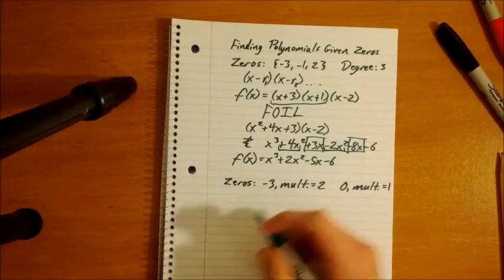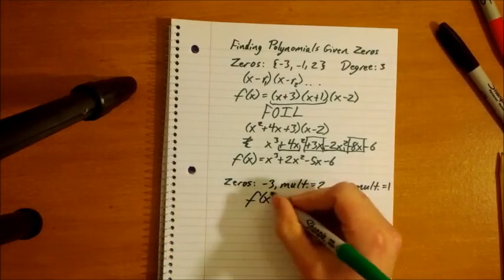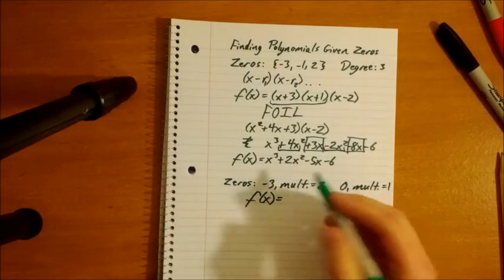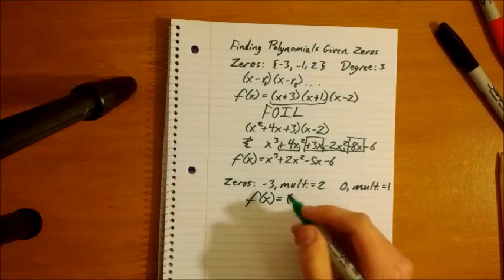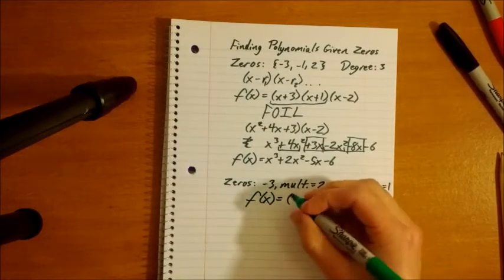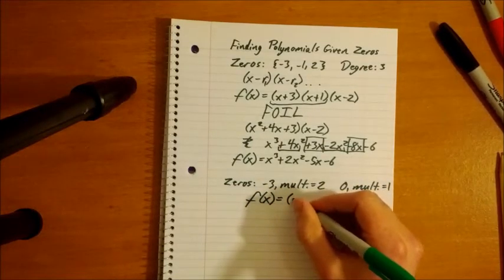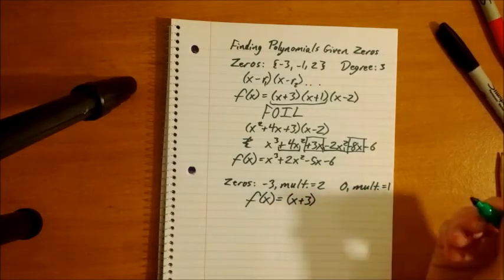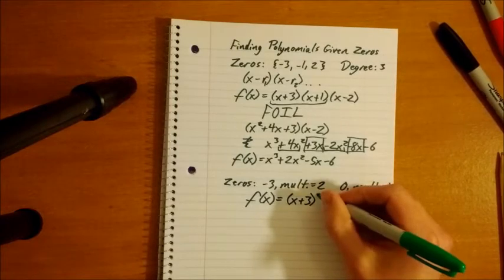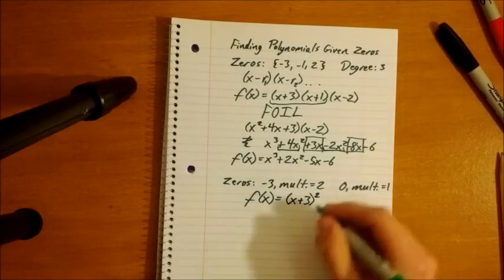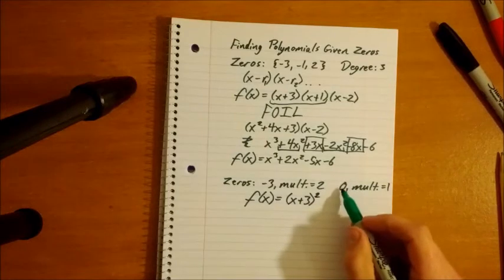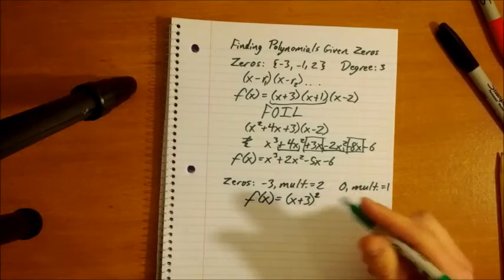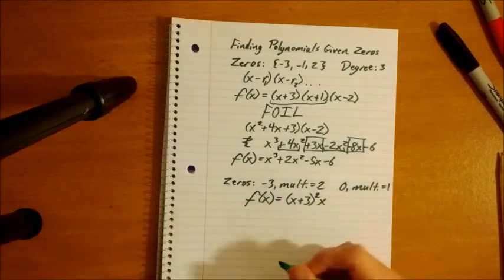Okay, so we have function of x equals, okay, have our factors, x minus 3, minus negative 3. X minus negative 3 is x plus 3. Okay, multiplicity of 2. All that means is we put a square on there, a 2 on there. Just throw a 2 on it. And then for the 0, we say x minus 0, that's just x. So really, we just have that times x.